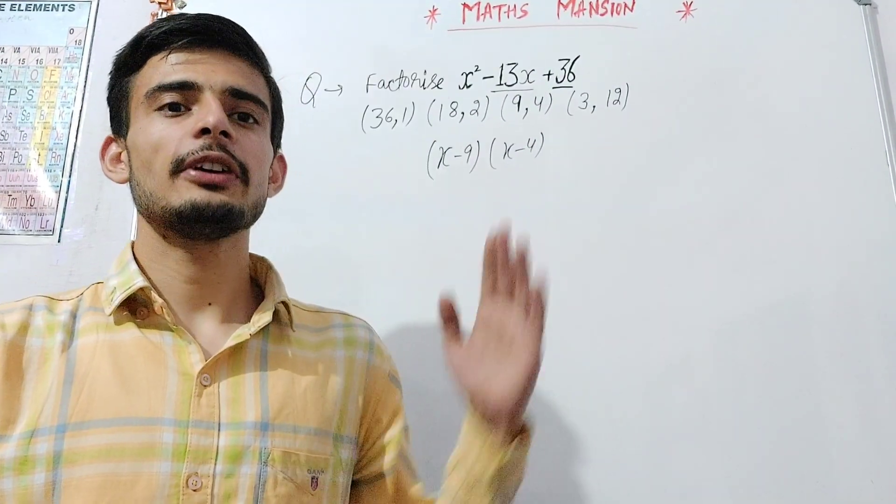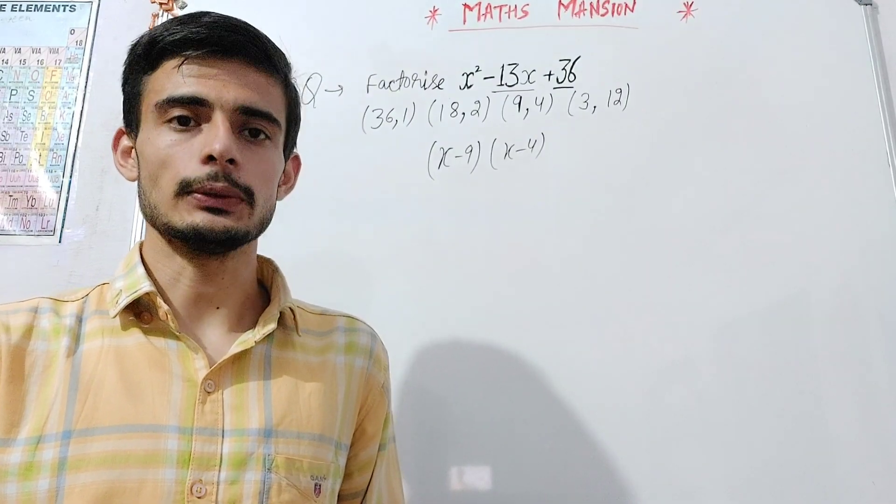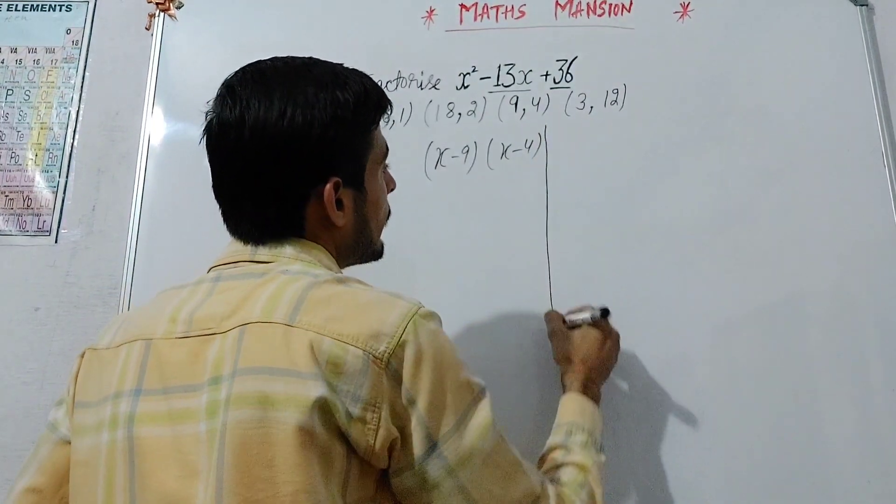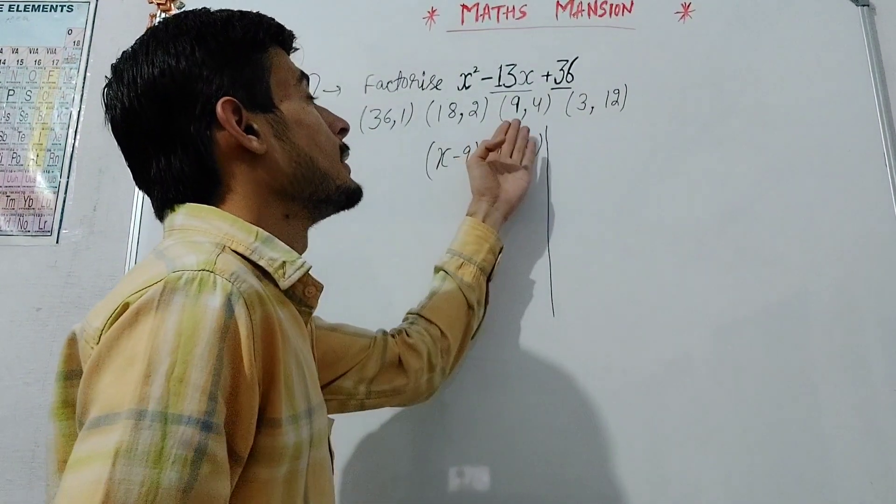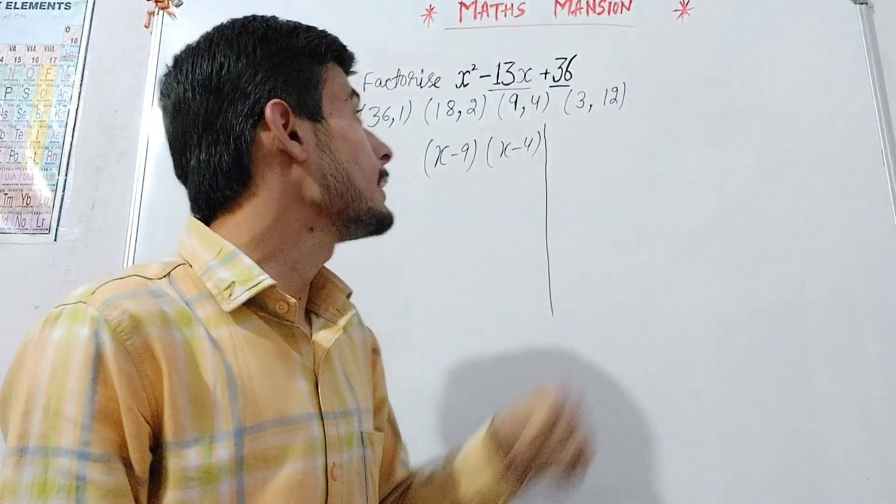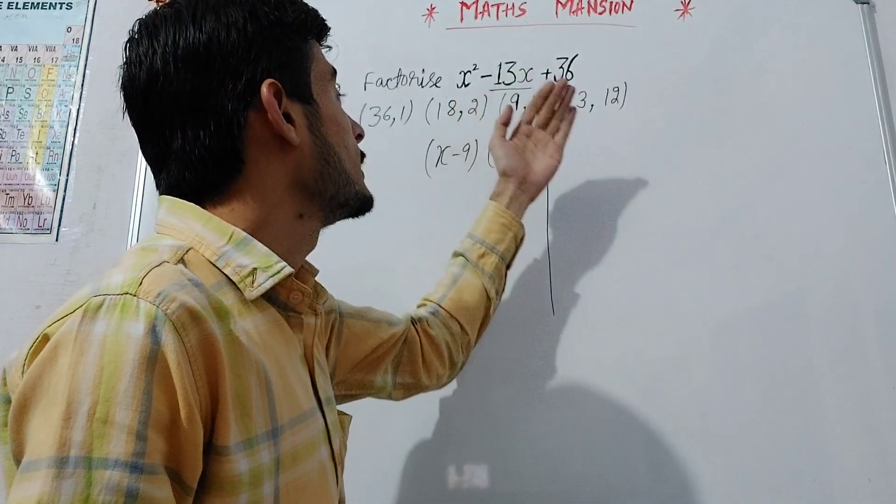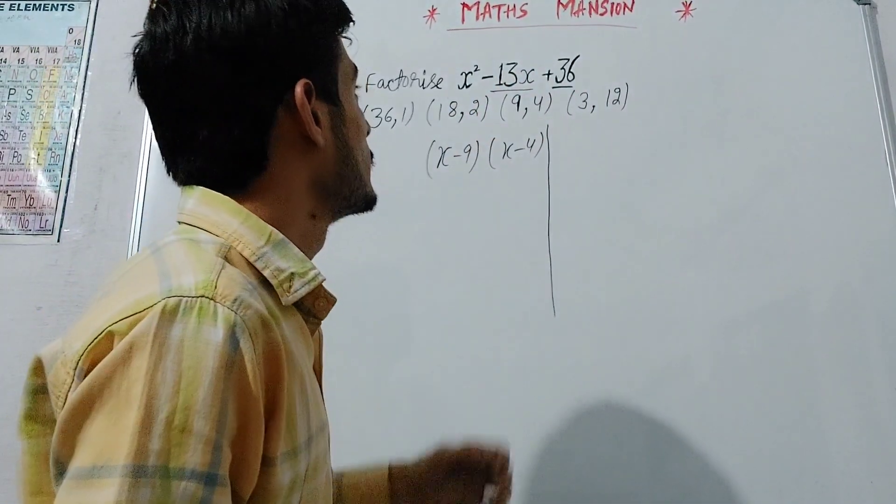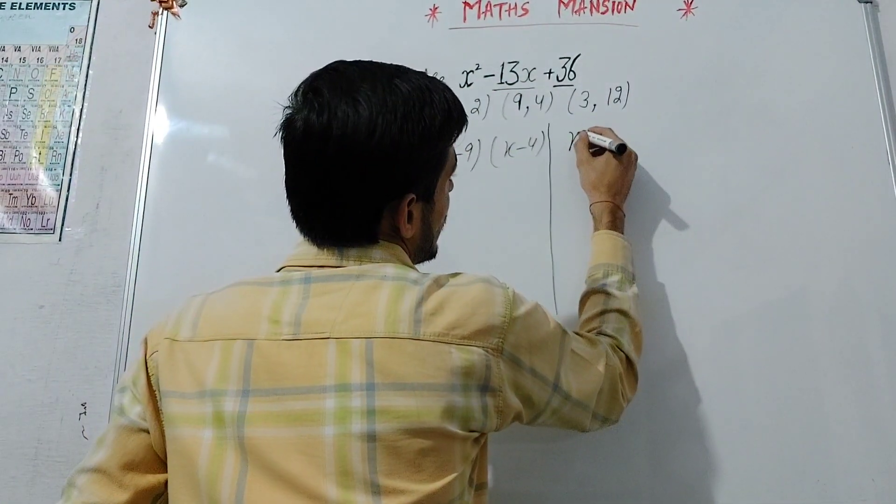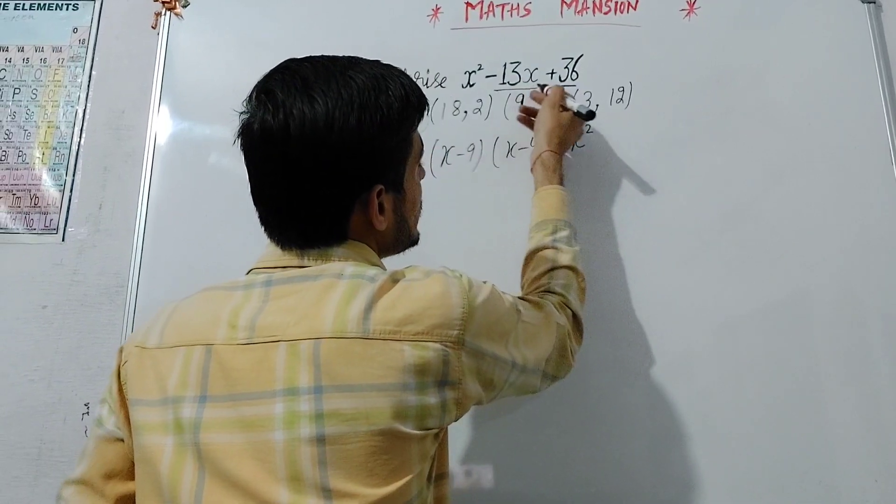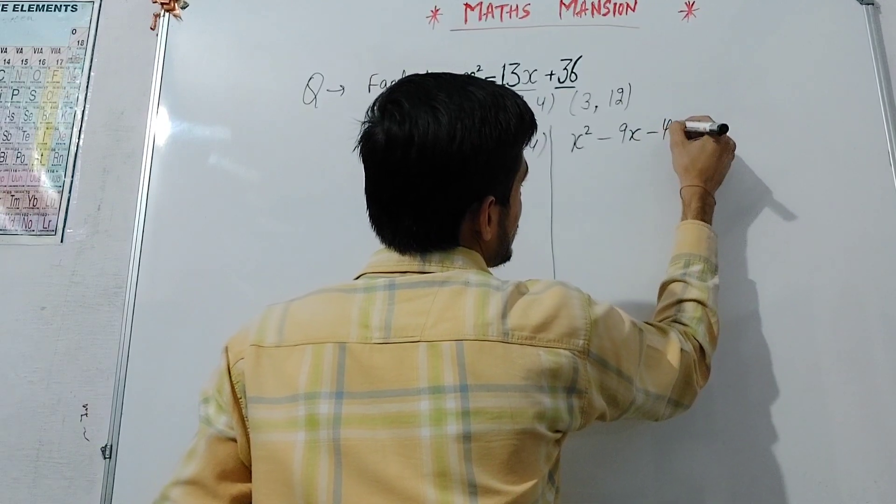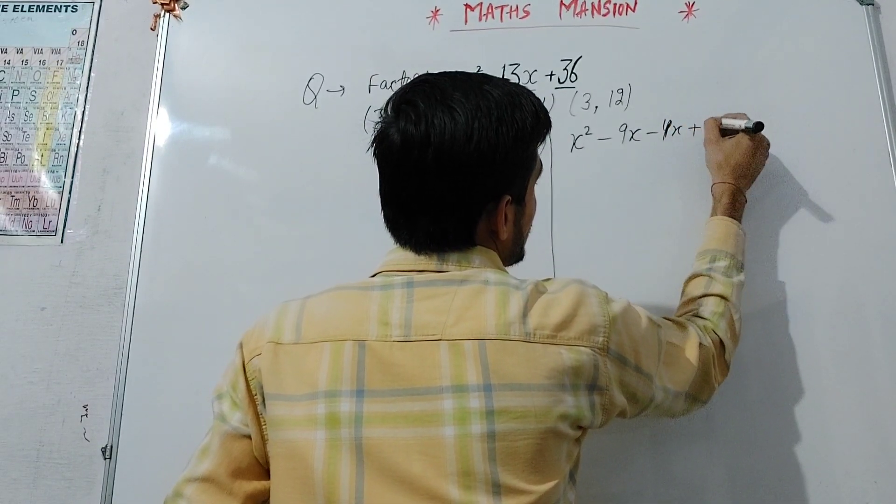Further, we can verify this answer by using the long method also. So let's verify. As we have seen that 9 and 4 sum to 13, we will break -13x into -9x and -4x.